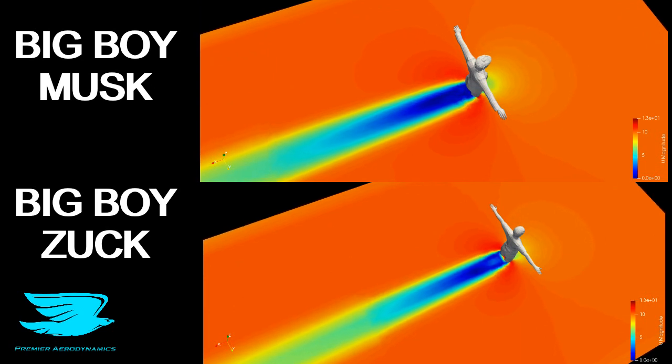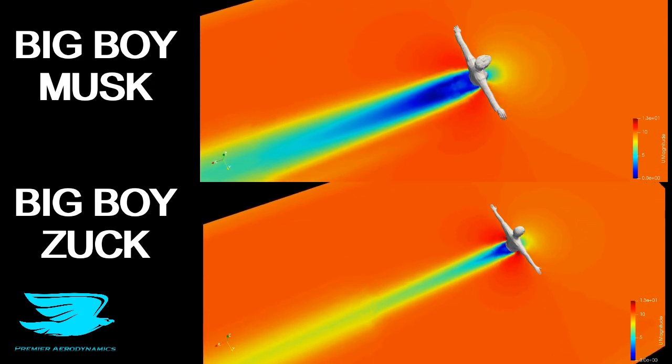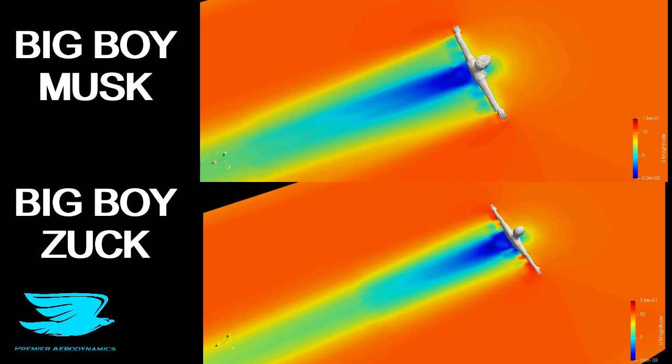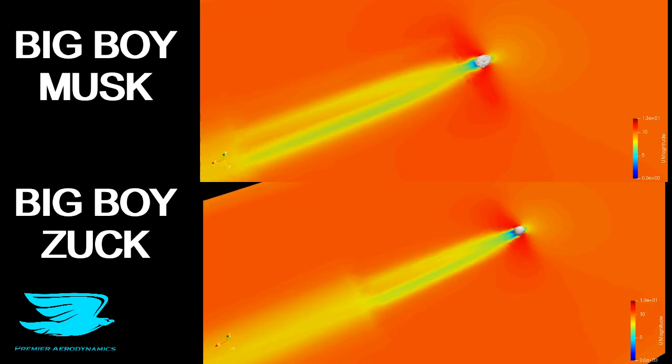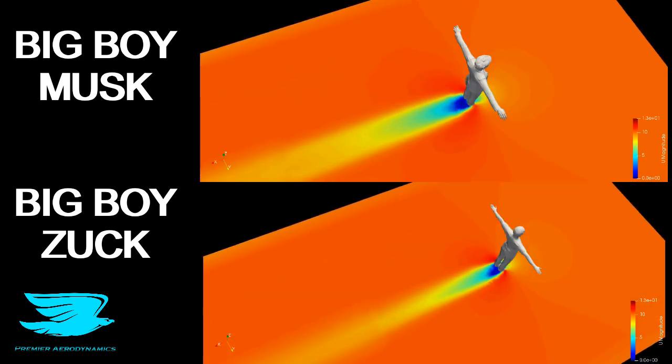Musk likes to wear suits more than Zuck. Zuck likes to wear regular t-shirts, which hug your figure a bit better, whereas the suit—the lapels of the front—create this separation pattern that increases your wake.